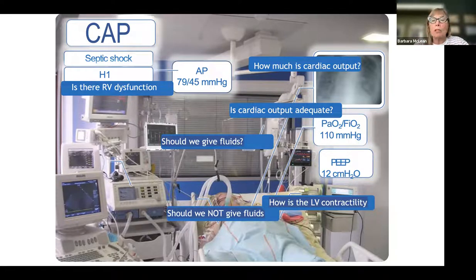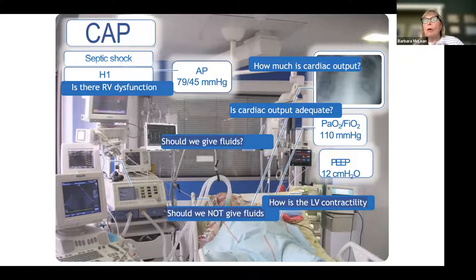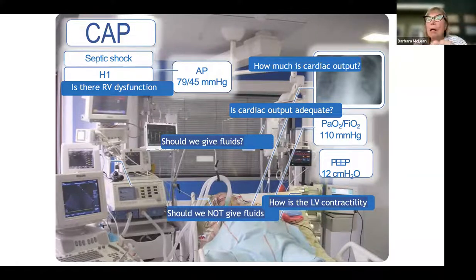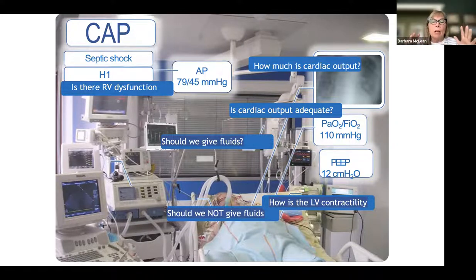When our patient is hypotensive, we have a few really important questions: should we give fluids or withhold fluids? How is the LV working? How is the RV working? Is cardiac output adequate, and how much is it? Our patient is quite hypotensive with community-acquired pneumonia, septic shock, and H1N1, and is poorly oxygenated with a lot of PEEP from the ventilator.